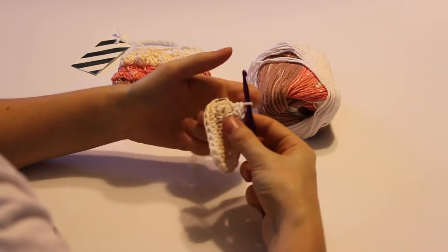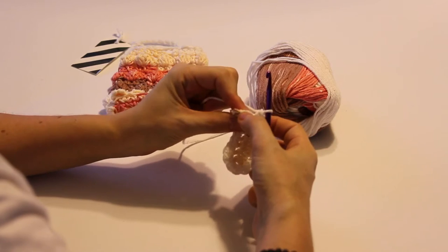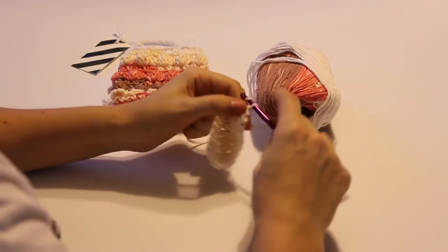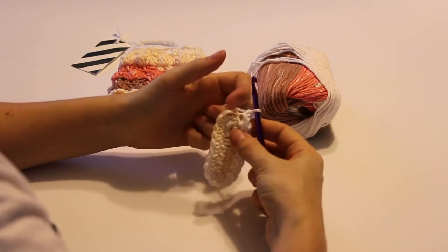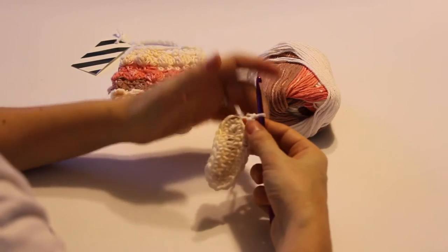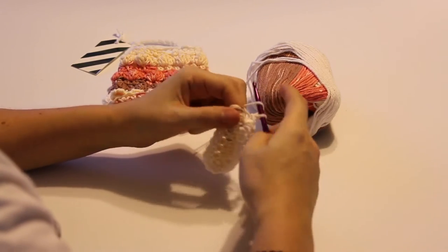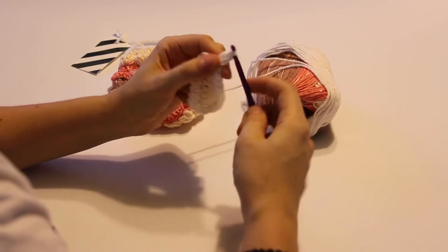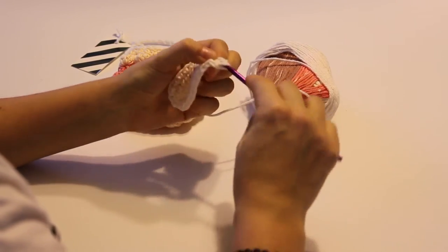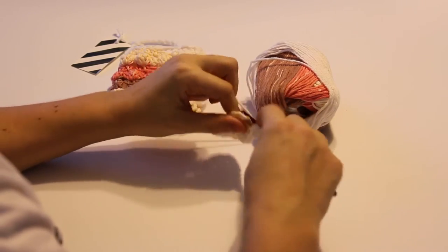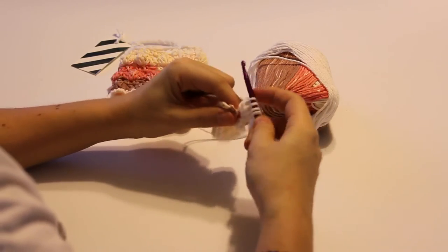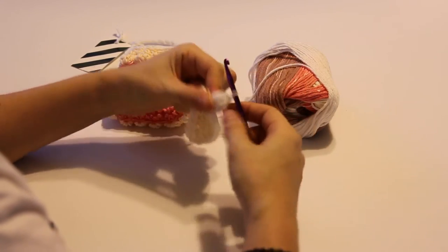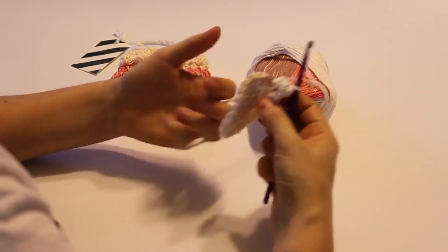So last time we didn't join. This is our first stitch. We are going to join this time, but you're going to join into the back loop only of that stitch and you just join with a slip stitch. Chain one and we are going to go ahead and work a bobble stitch into this one. If you want to chain two, go ahead. I just like to chain one. So you do yarn over, you insert your hook and pull up a loop, yarn over, pull through two and then you just do that again until you have five loops on your hook. So four and five. So then I yarn over and I pull through all five and just make sure you keep that bobble facing outwards.